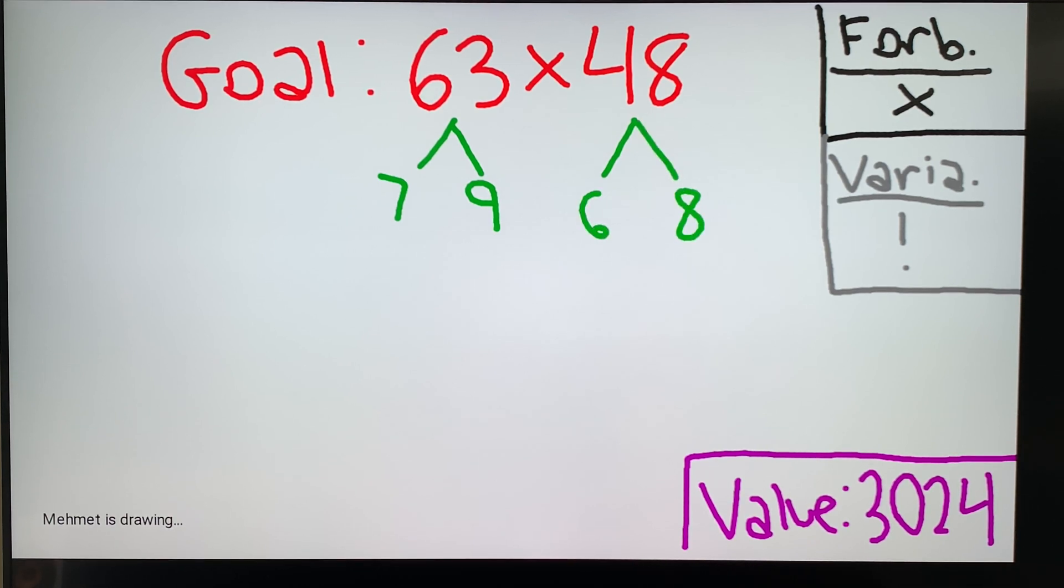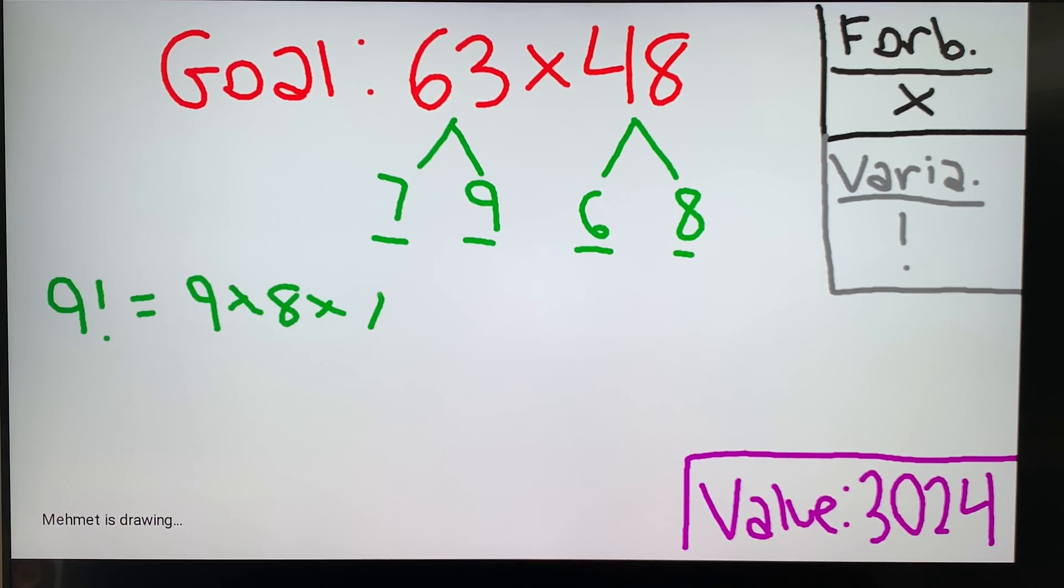What do you notice about these numbers? They're in a consecutive order: 6 times 7 times 8 times 9. The highest number here is 9. So we see that 9 factorial is equal to 9 times 8 times 7 times 6 times 5 times 4 times 3 times 2.